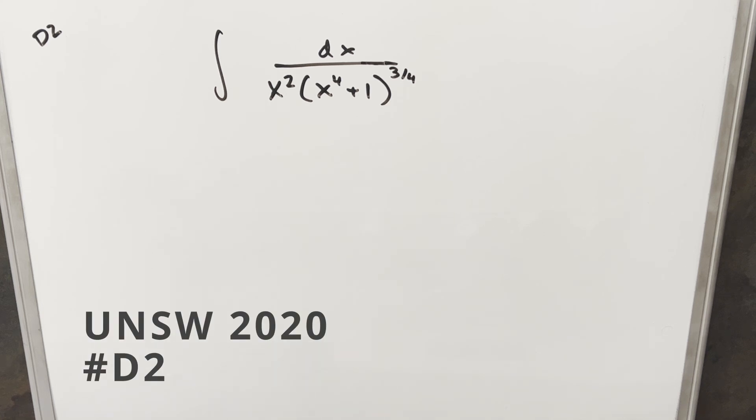Okay, we have here today another interesting integral from the UNSW integration view from 2020. This was problem d2. We have the integral of 1 over x squared, x to the 4th plus 1 to the 3 4ths dx.